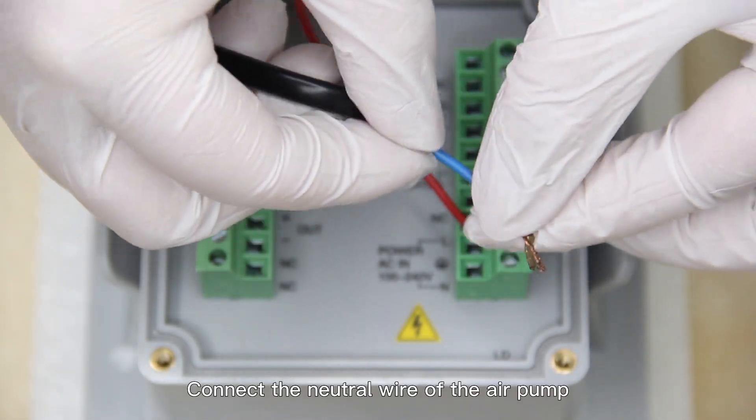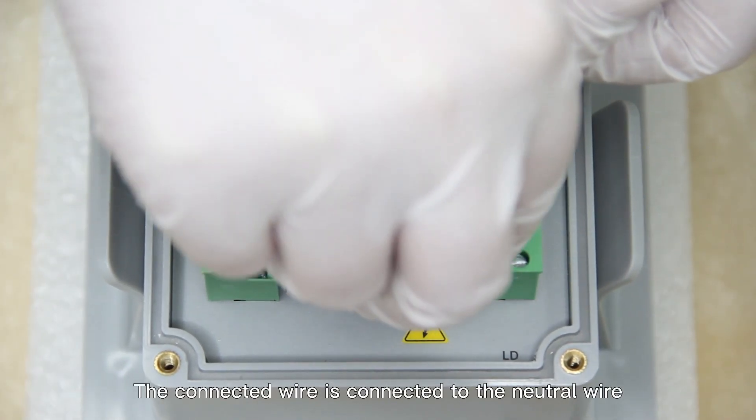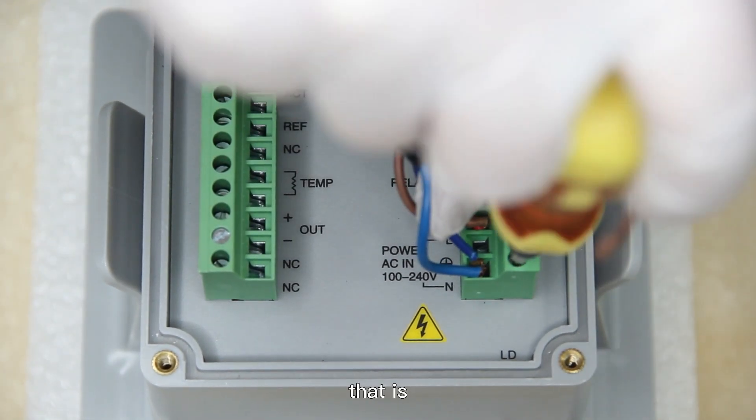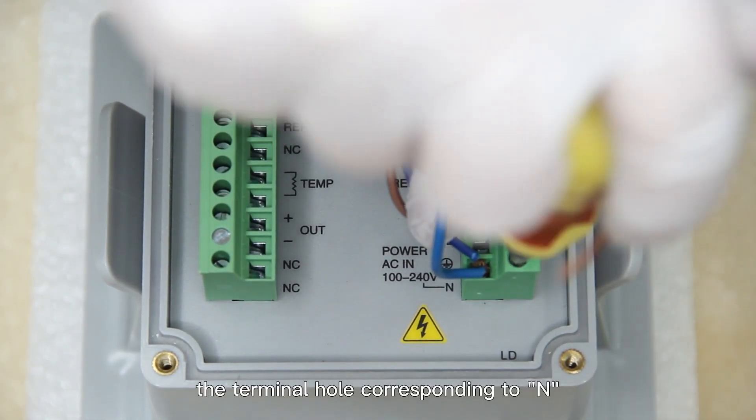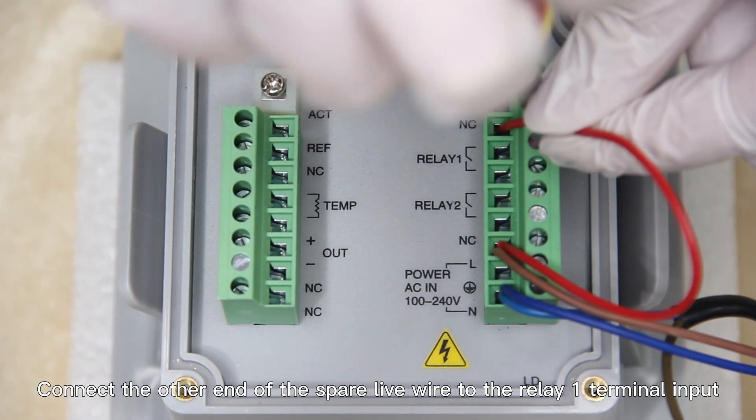Connect the neutral wire of the air pump with the neutral wire of the power line. The connected wire is connected to the neutral wire terminal hole of the meter, that is, the terminal hole corresponding to N.